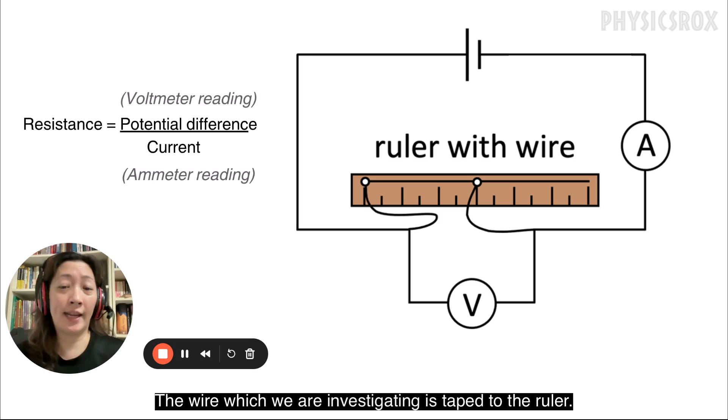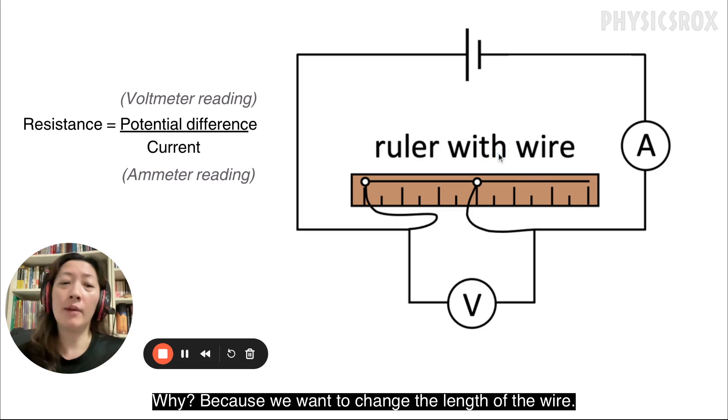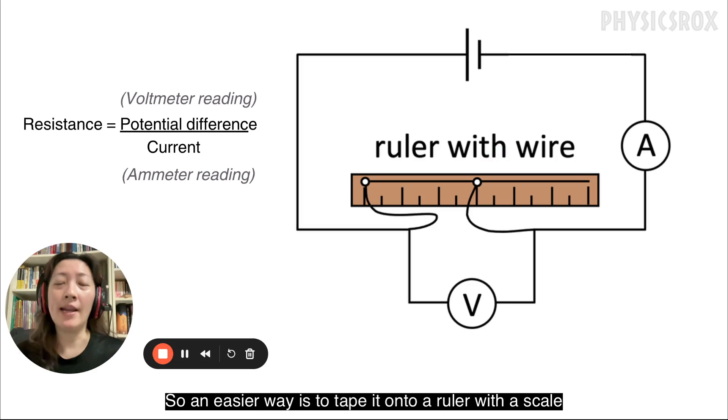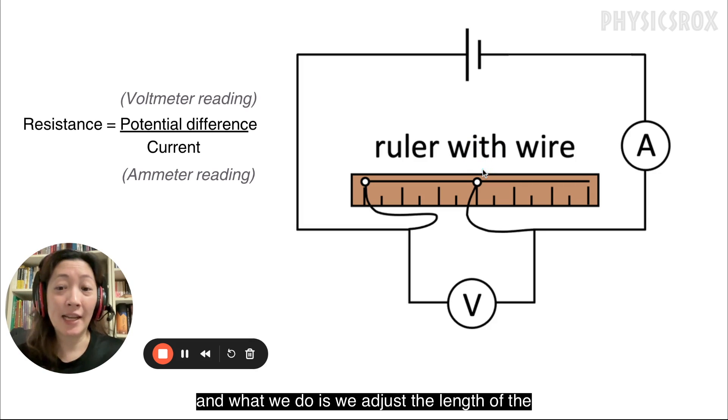The wire which we are investigating is taped to the ruler. Why? Because we want to change the length of the wire. So an easier way is to tape it onto a ruler with a scale, and what we do is we adjust the length of the wire by means of the crocodile clips.